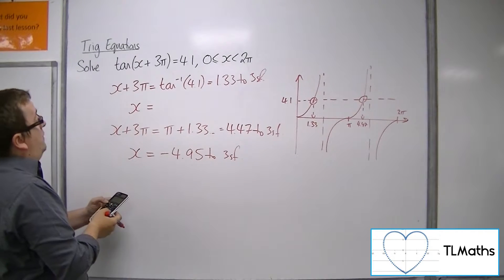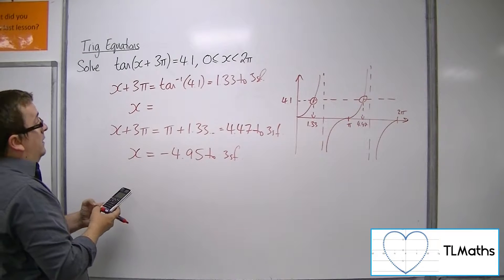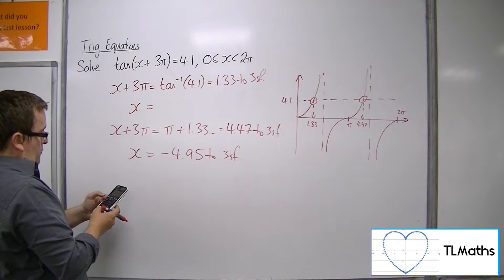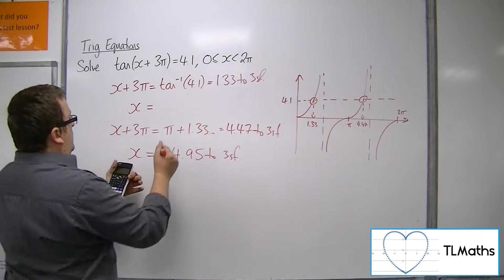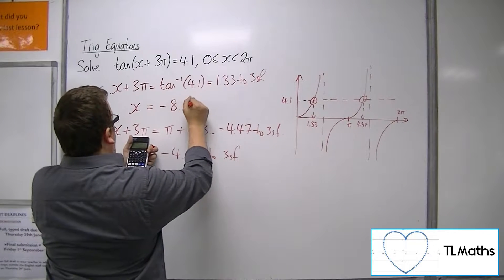And for this one, inverse tan of 4.1, take away 3 times π, which is minus 8.09.